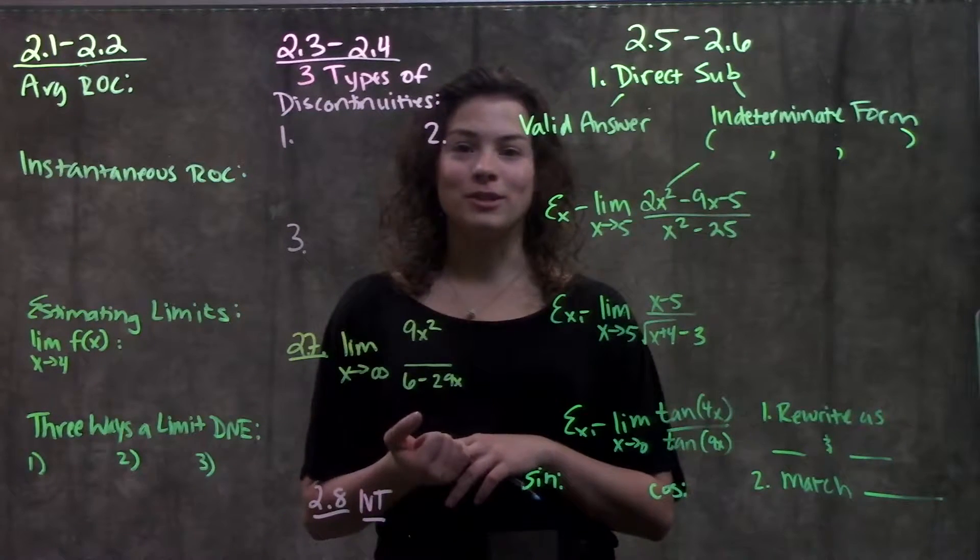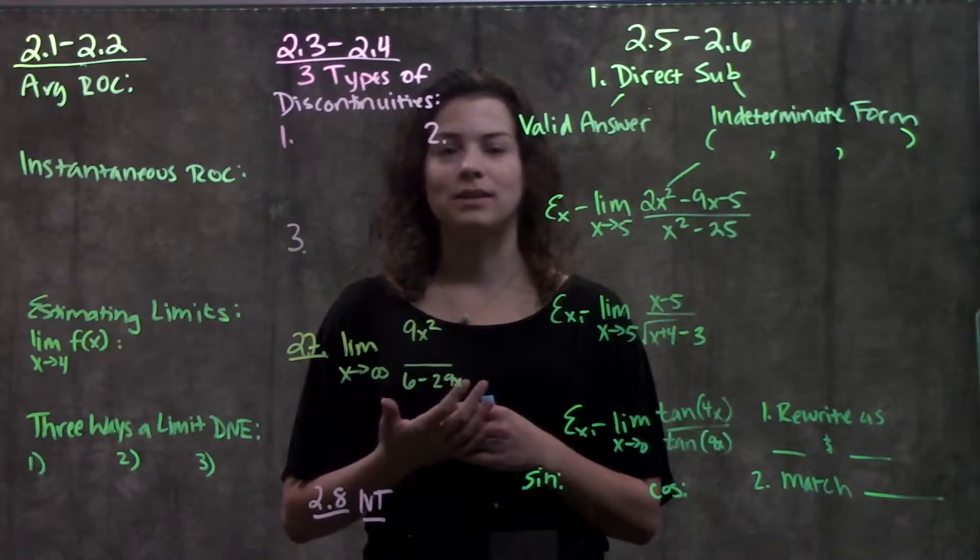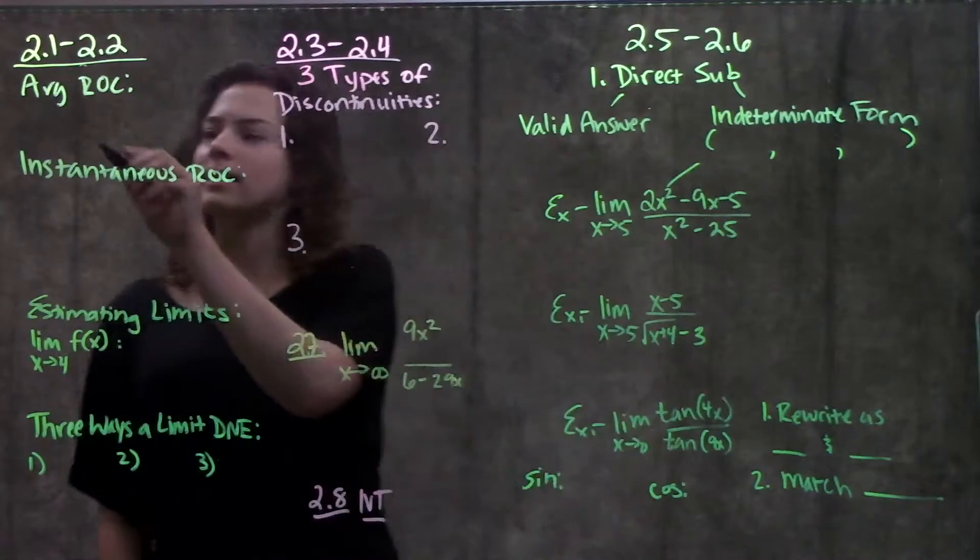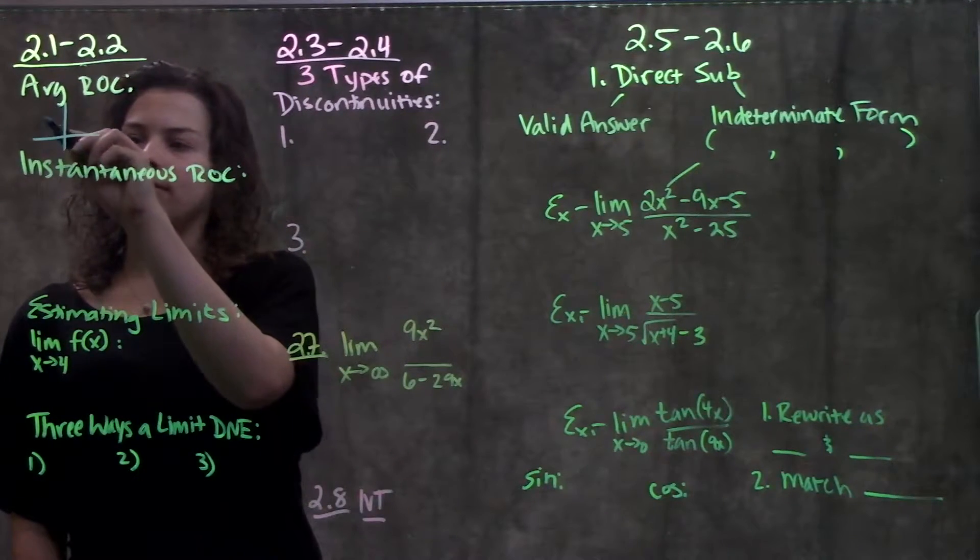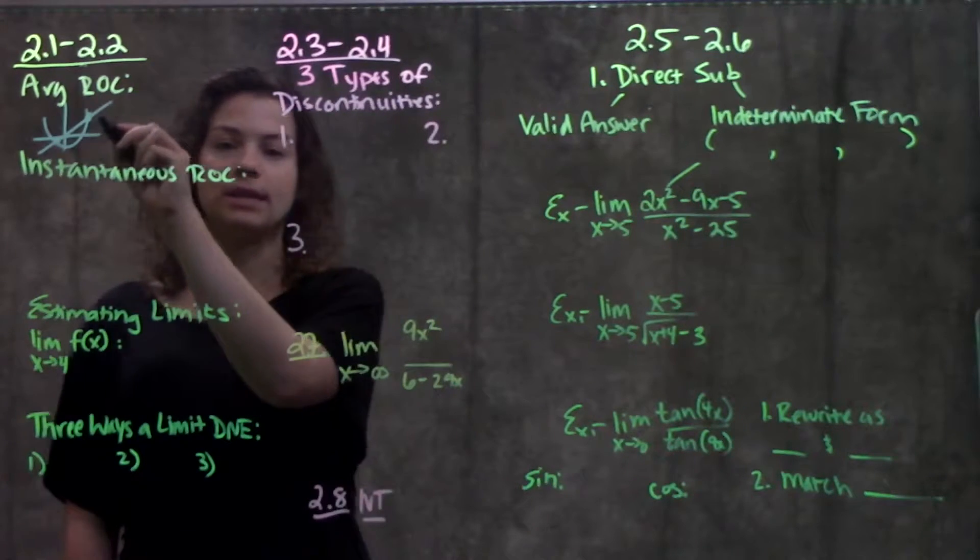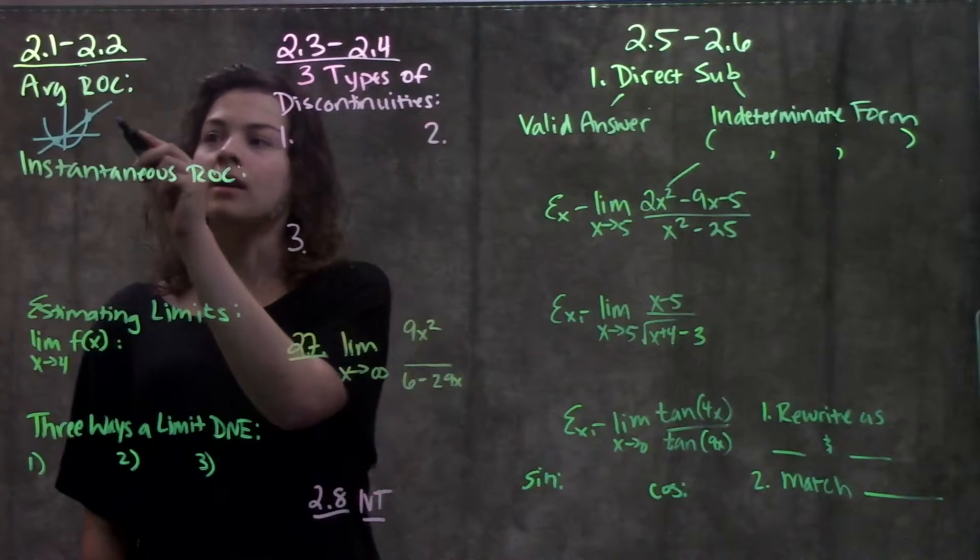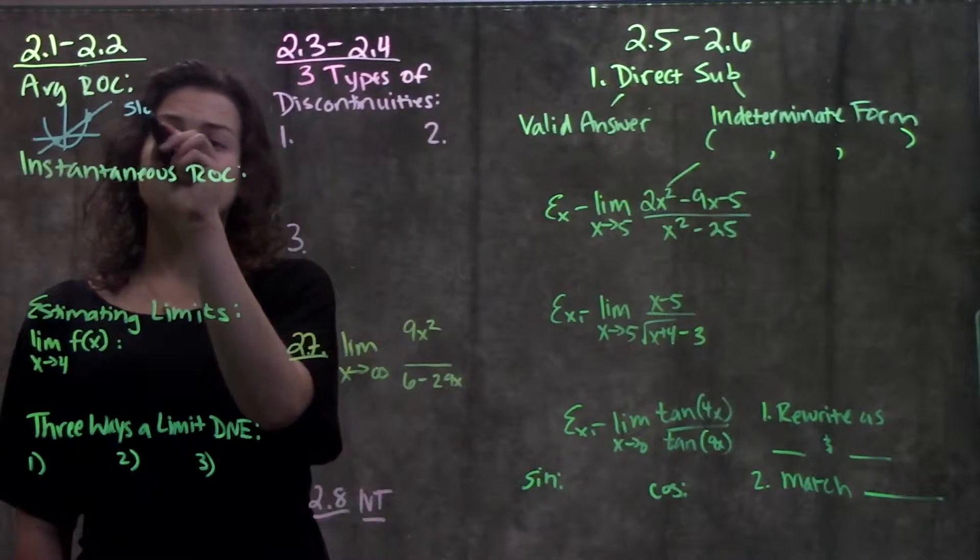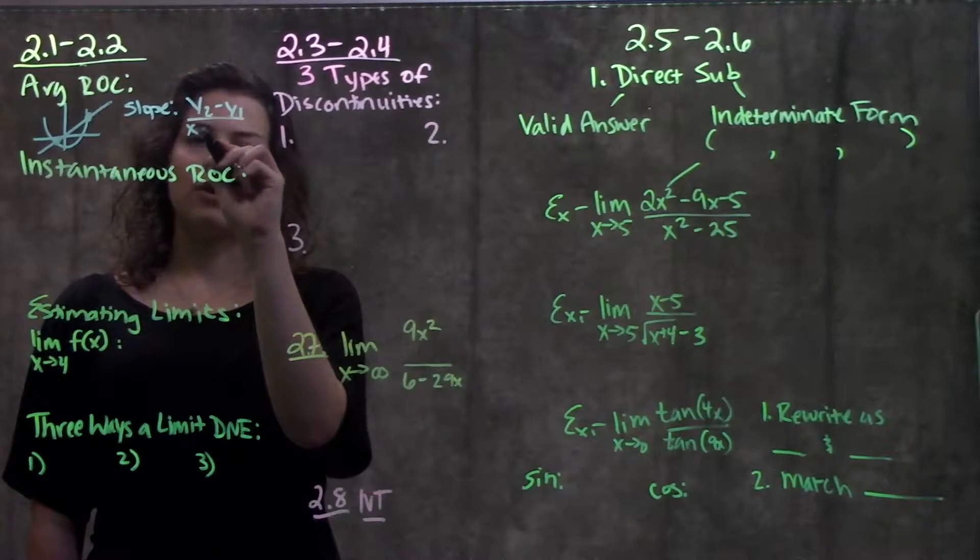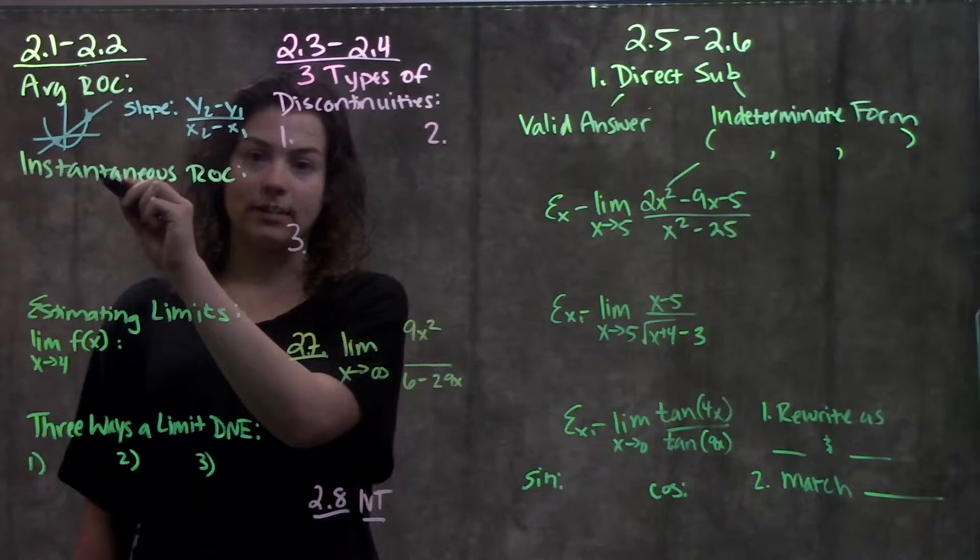For section 2.1 to 2.2, we're talking about rate of change, and we had two kinds: average and instantaneous. Average rate of change is what we're used to. On a graph, it looks like this - we have some function, and average rate of change is just the line between these two points that you're interested in. It's the secant line. The way we calculate average rate of change is we use our slope formula, difference in y's over difference in x's. That will give you the average rate of change between two points in a function.